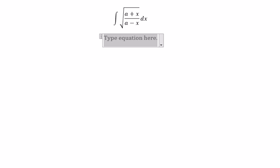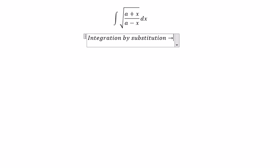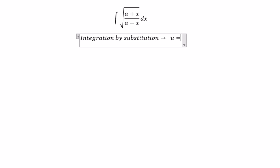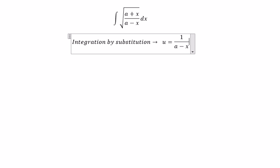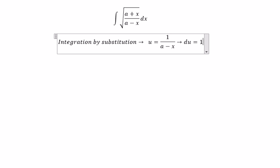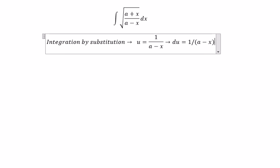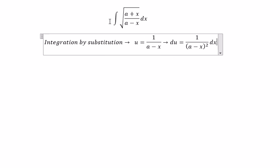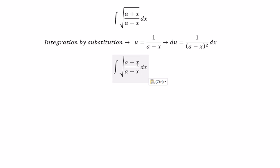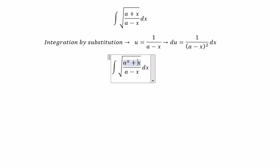First, we need to use integration by substitution. So we put u equal to 1 over a minus x. du equal to 1 over (a minus x) to the power of 2, dx. For this one, we need to change a little bit. We multiply with the square root of (a minus x) on the numerator and denominator. So this one you call a squared minus (a squared minus x squared).